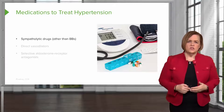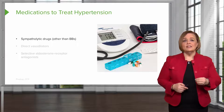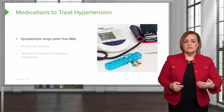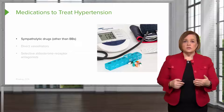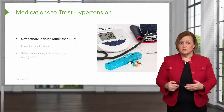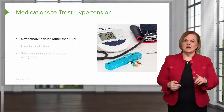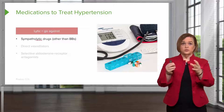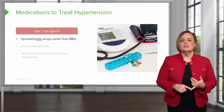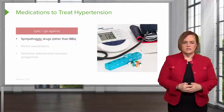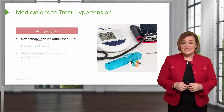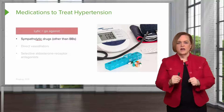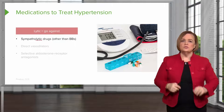Some other medications we use to treat hypertension are sympatholytic drugs — drugs other than beta blockers. In other videos, we've discussed sympathomimetic drugs, which are things that imitate the sympathetic nervous system being stimulated. This is the opposite. Underline the letters L-Y-T-I-C — lytic means to go against. So sympatholytic drugs will do the opposite of what the sympathetic nervous system does. Since the sympathetic nervous system causes potent vasoconstriction and increases heart rate, sympatholytic drugs will do the opposite.